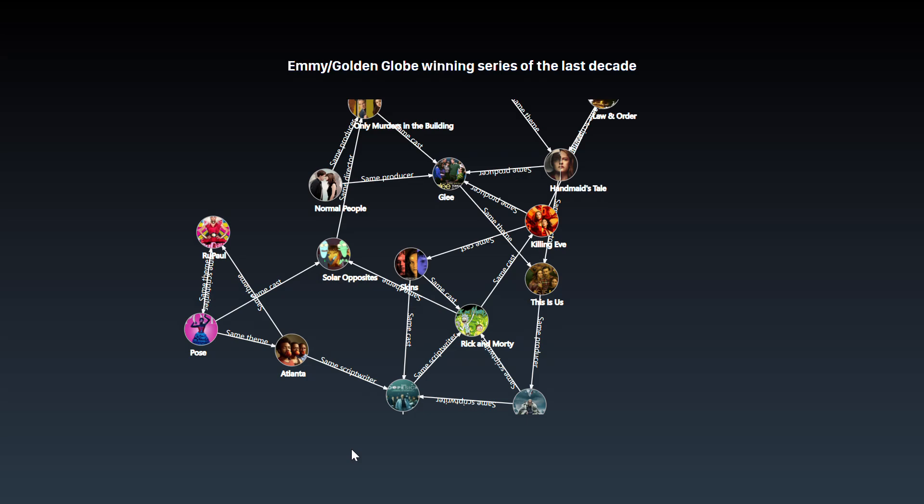This is a force-directed graph and one of the most interesting visualizations for me. The graph shows the connections between some of the Hulu episodes that have won Golden Globes and Emmys. The nodes represent a TV show and you can hover your mouse to see what it is about. If a straight line exists between two nodes, it indicates that there is a connection between the two shows — they may have the same director, the same theme, or the same cast, and this relationship is labeled on the line.